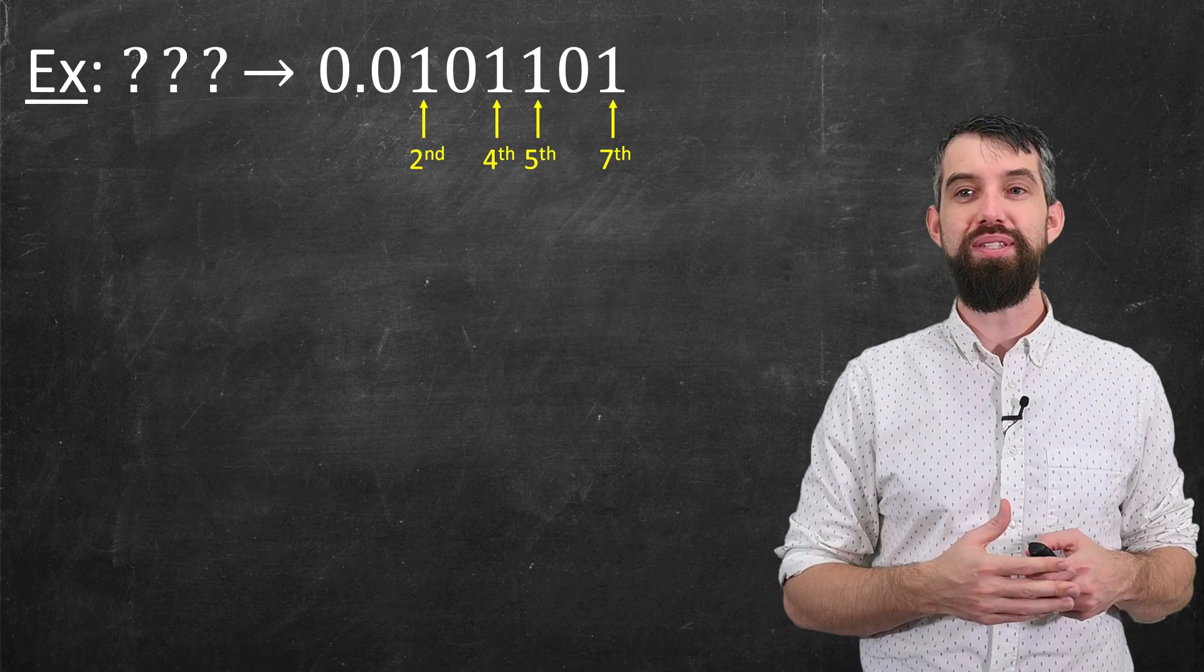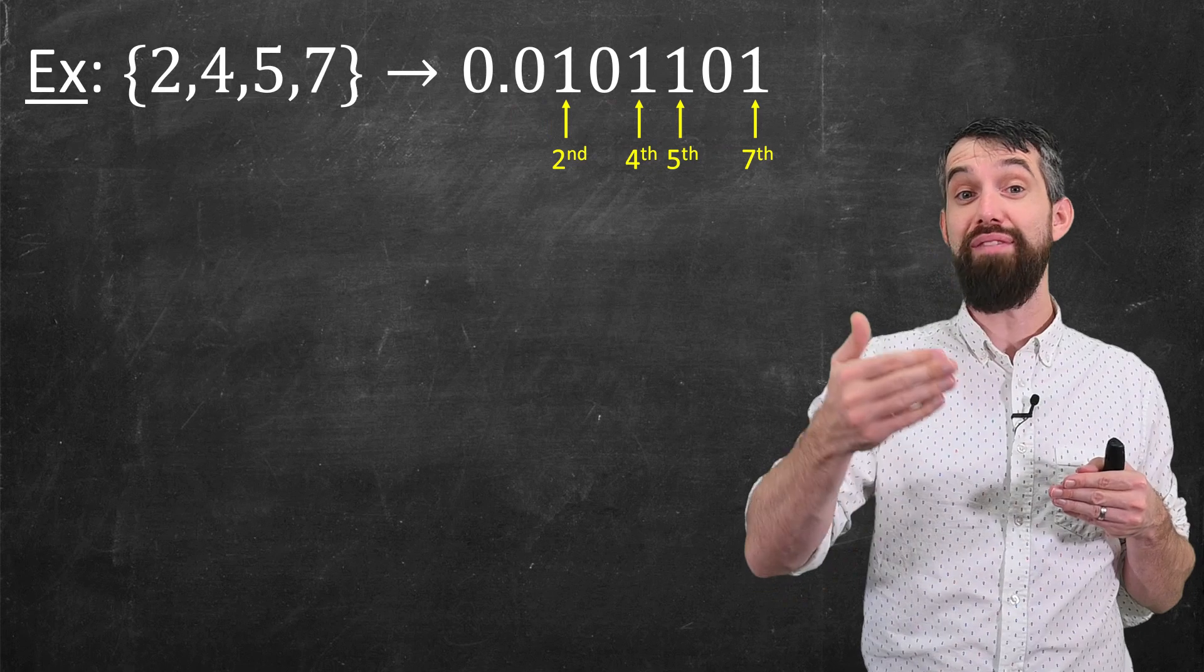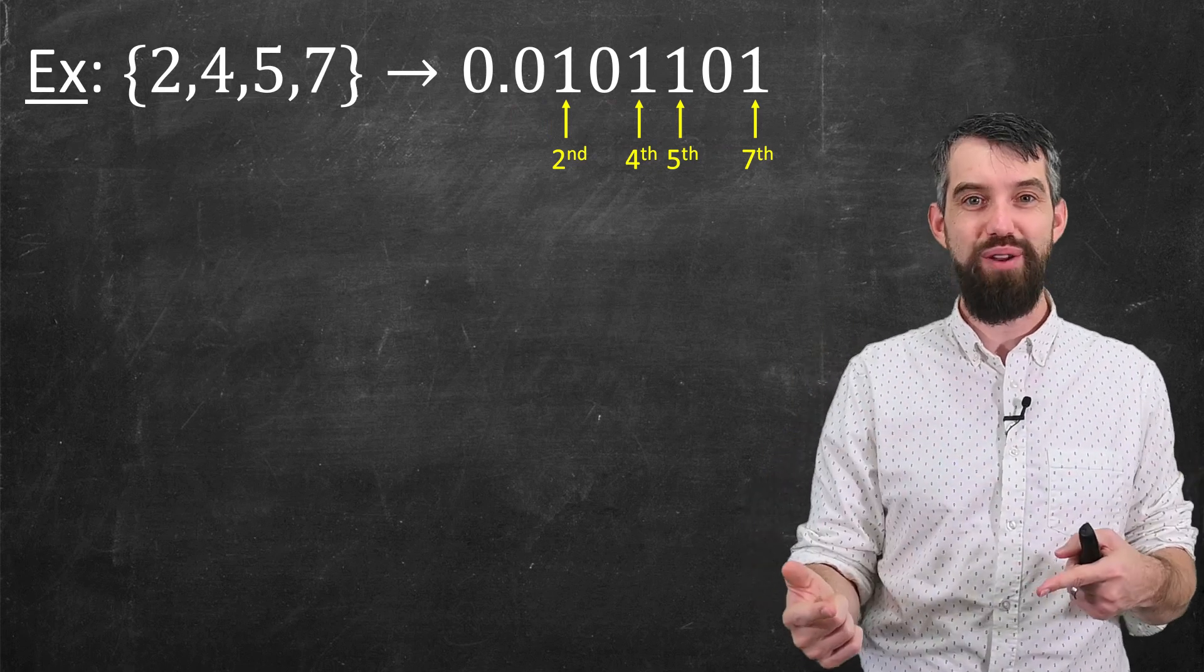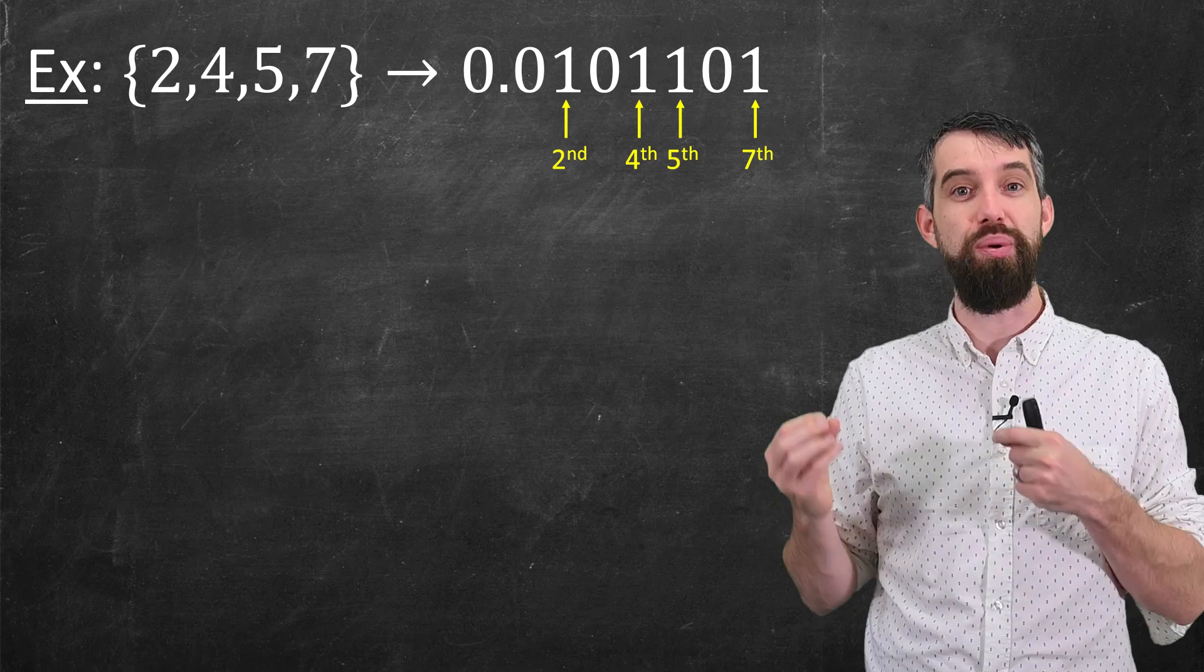And thus, if I took the subset that was {2, 4, 5, 7}, {2, 4, 5, 7} under this function would match to this particular binary number.